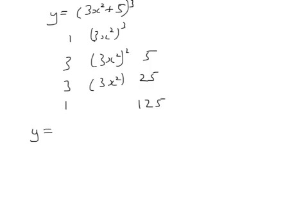So the full expansion is 3x squared cubed. Well, 3 cubed is 27, so that's 27x to the power 6. We've got 5 times 3, that's 15. 15 times 3 squared, 15 times 9, that's 135. So it's 135x to the power 4. And then we have 25 times 3 times 3, so 9 times 25, that's 225x squared, and 1 times 125.